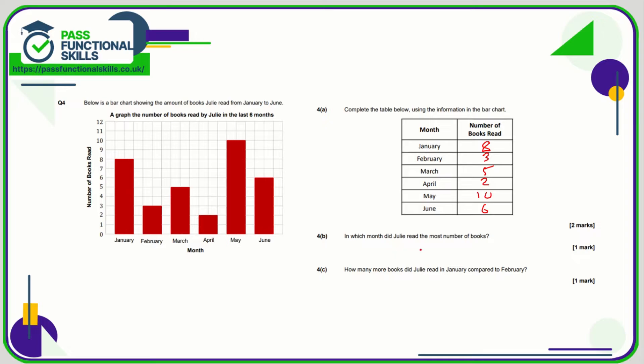In which month did Julie read the most books? Well you can either look for the biggest number in the table or just see which bar goes the highest. You can see May is higher, so May is the answer to 4b. And how many more books did Julie read in January compared to February? Probably go off the table since we've done it. It's the difference between 8 and 3. 8 takeaway 3 is 5.